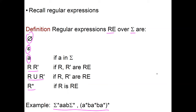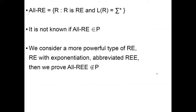Let us now consider the language all-RE, which is the language of regular expressions whose language is sigma star. We can't quite use this because it's not known if all-RE is in P. So we're going to consider a more powerful version of this language made with regular expressions with exponentiation, abbreviated RE↑, and prove that all-RE↑ is not in P.